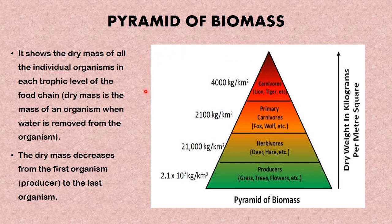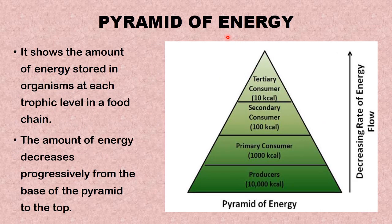We have the pyramid of biomass. The pyramid of biomass shows the dry mass of all the individual organisms in the trophic level of the food chain. The dry mass is the mass of an organism when water is removed from it. The dry mass decreases from the first organism — the producer — to the last organism. You can see from the pyramid that the producers have the largest amount of dry mass, and the dry weight, expressed in kilograms per meter squared, decreases from the producers to the carnivores.